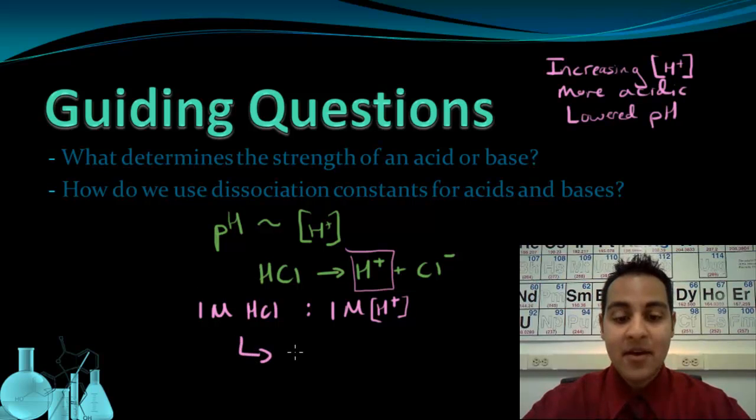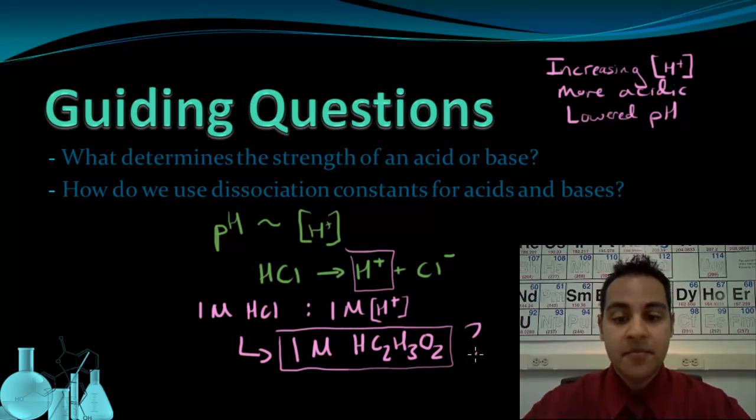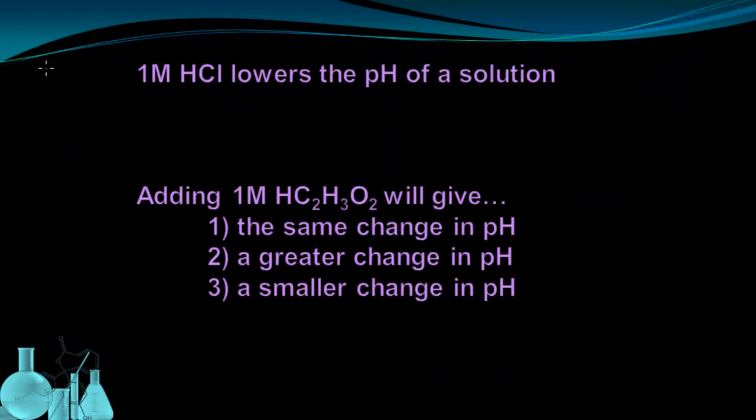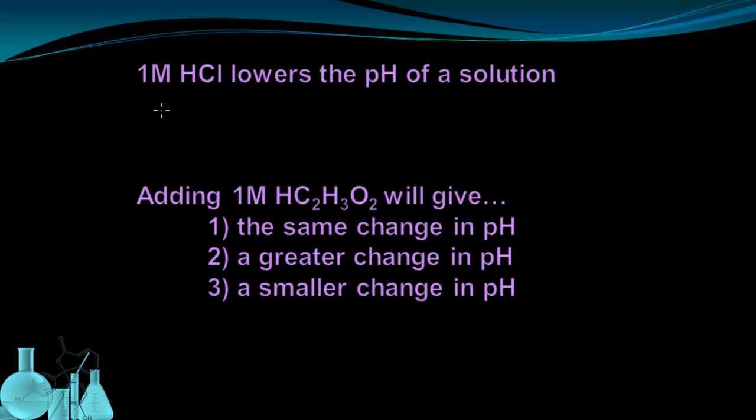This one molar HCl will definitely lower the pH of a solution that I added to. But how does that compare to one molar acetic acid, the acid that's found in vinegar? So let's compare these two acids and see what happens. We just said that one molar HCl lowers the pH of a solution. Now we're going to compare that to the one molar acetic acid.